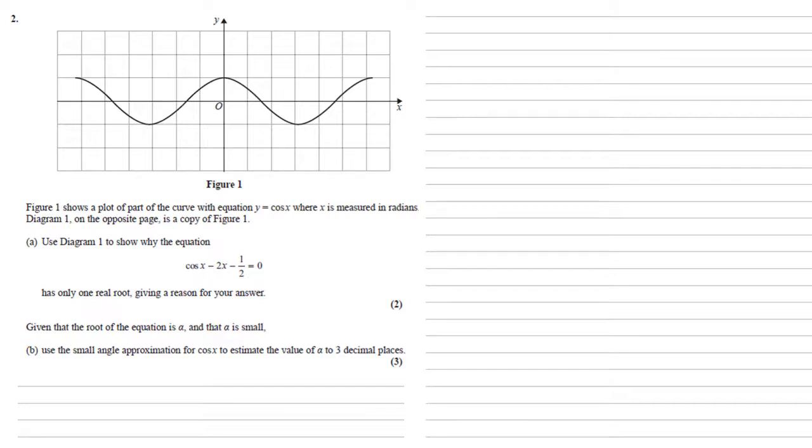By rearranging our equation we can get that cos x equals 2x plus one half. We've already got on Figure 1 the graph of y equals cos x, the left-hand side of our equation. So if we can draw the graph y equals 2x plus one half, the right-hand side of the equation, and see if the lines meet, this will help us solve the question.